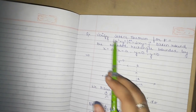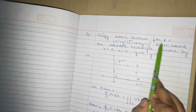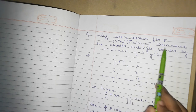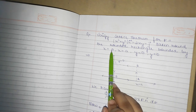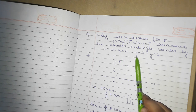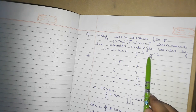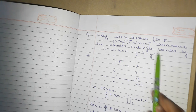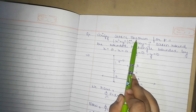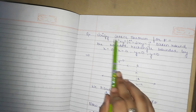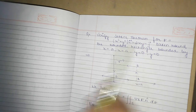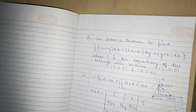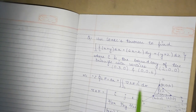Now one more question. The question is: verify Stokes theorem for F equal to this function, taken around the rectangle bounded by x=0, x=a, y=0, and y=b. We have to prove that Stokes theorem holds here, that is, the LHS equals the RHS of the Stokes formula.